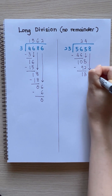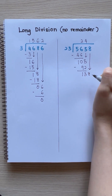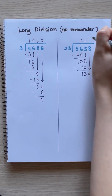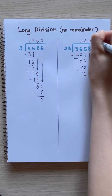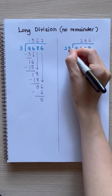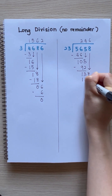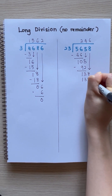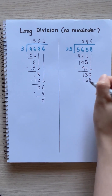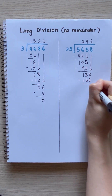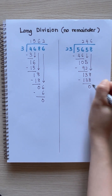138. 6 times 23 equals 138. 138 minus 138 equals 0.